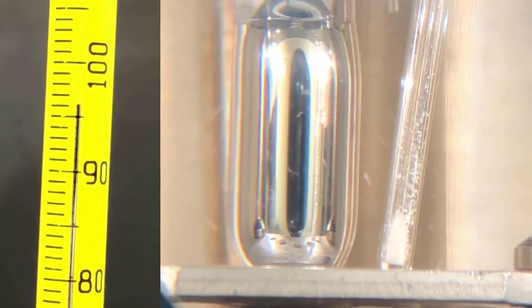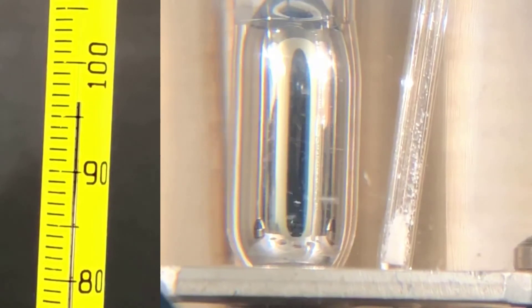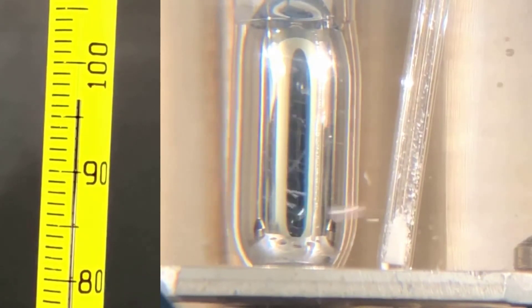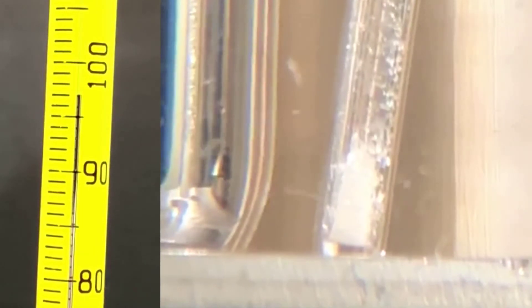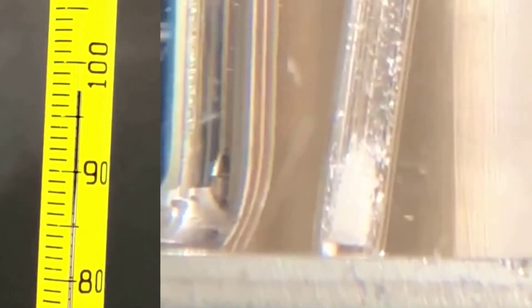When you actually determine a melting point in the lab, you'll go much more slowly than this, increasing temperature at a rate of about 1 to 2 degrees Celsius per minute. Remember that melting point is a range of temperatures. When you see the first drop of liquid, record the temperature.